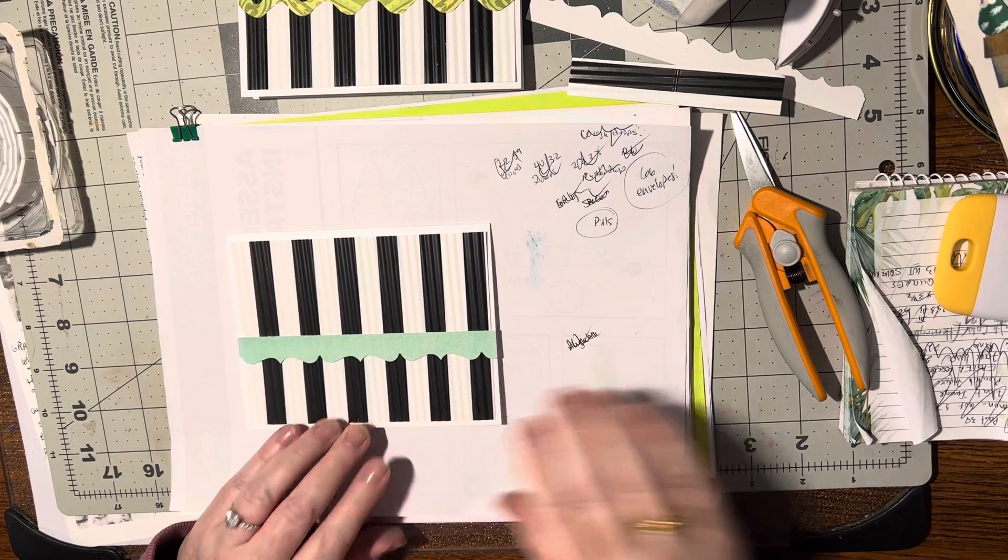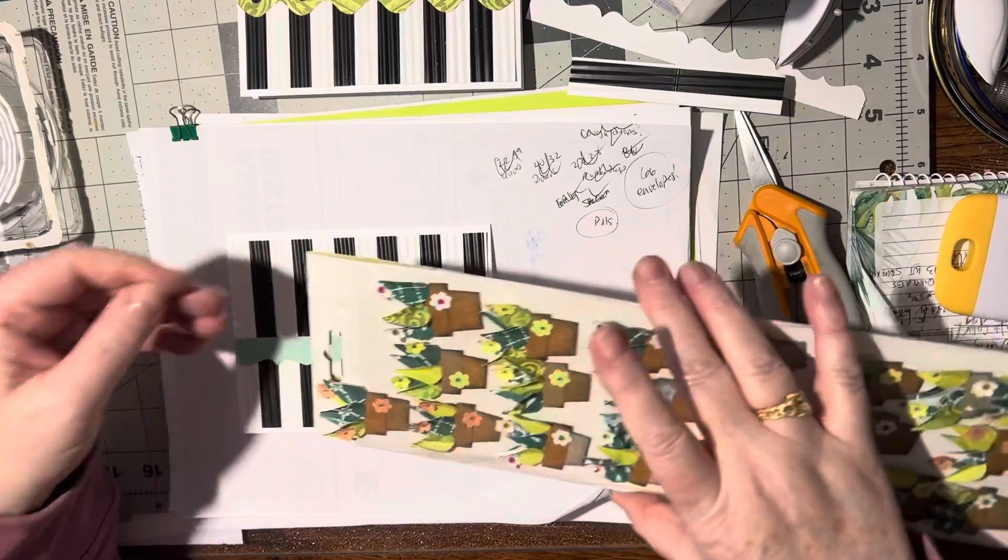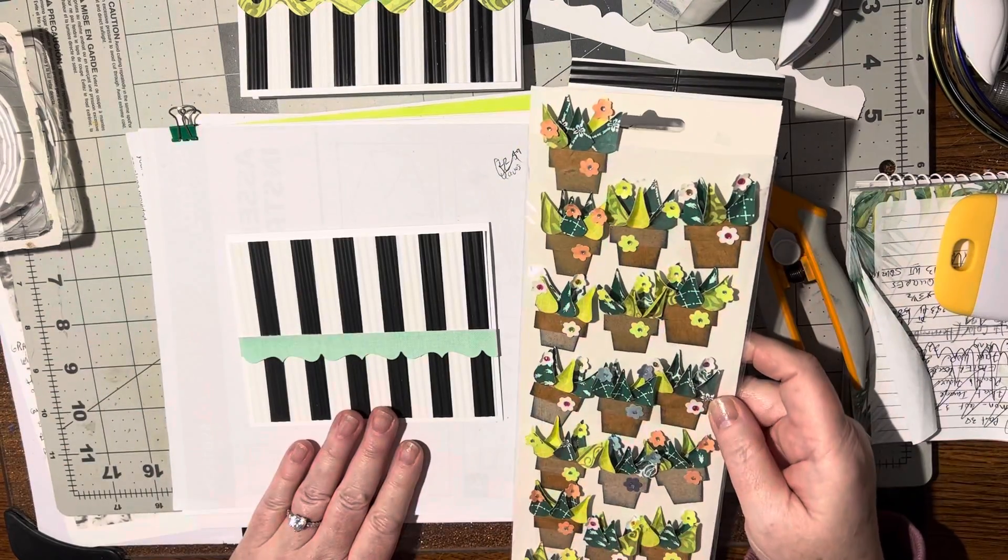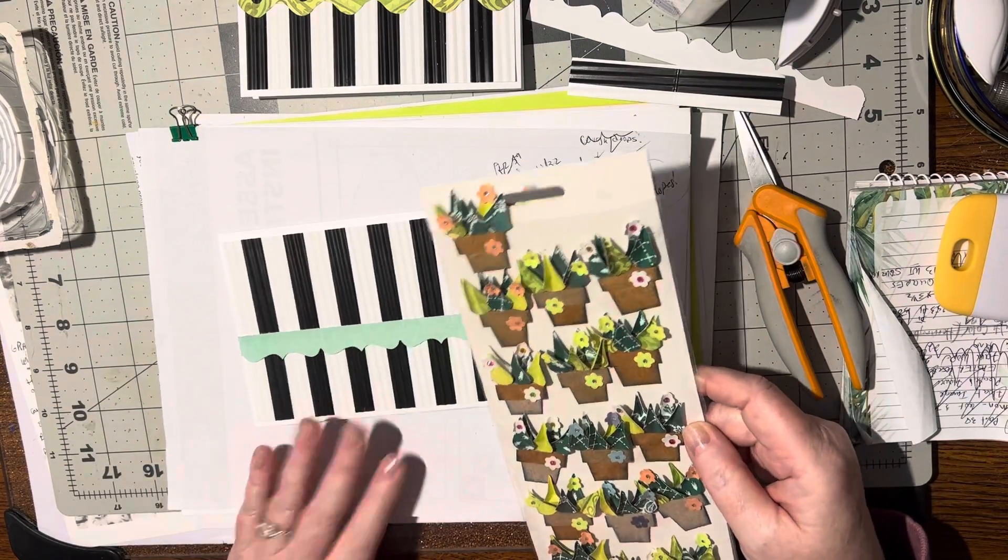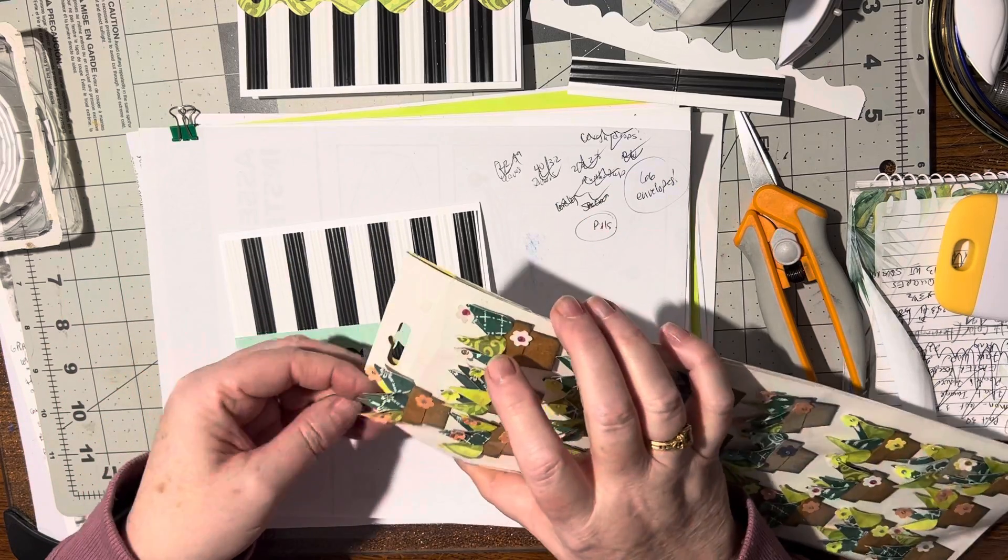All righty, so there's that part. And then here's my package of succulents that I made. Let's see, which one do I want to do? Okay, I may as well just go ahead and do that pretty orange one - that's really pretty.